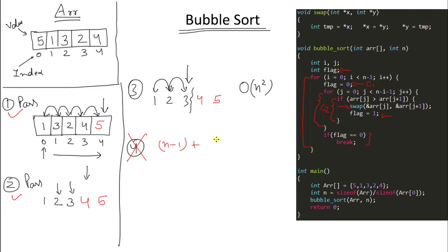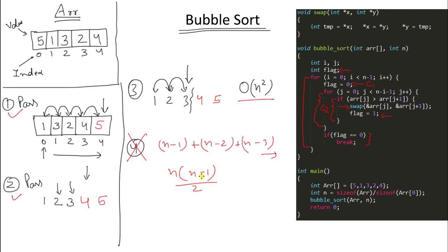When i is 0, the inner loop runs n minus 1 times; then n minus 2, then n minus 3 — this is an arithmetic progression. When you encounter this pattern in time complexity analysis, you can directly state the complexity is O(n²) because we always choose the highest-order term. In the worst case we check every element against every other, giving n² comparisons. That's the time complexity for bubble sort.